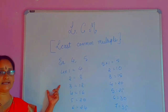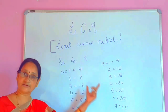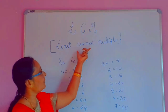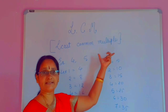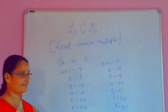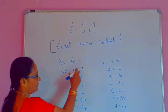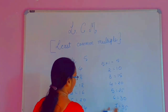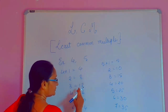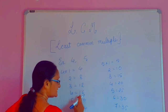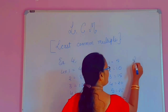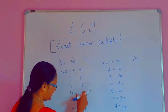After writing the multiples of both numbers, we have to find out common multiples among these. Which are the common multiples? Just observe: here we see 4, 8, 12, 16, 20. One common multiple is 20.